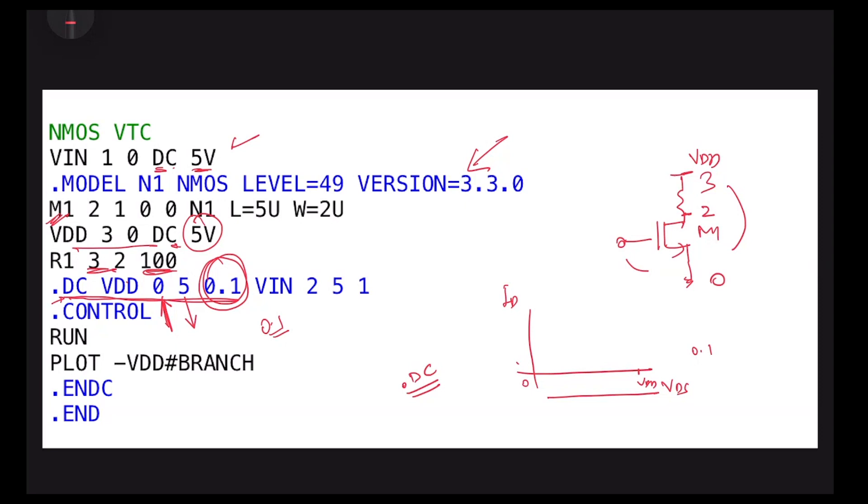We are changing VGS also. That's why I'm changing VGS from 2 to 5. I didn't change it from 0 - changed it from 2 to 5 in a step of 1.